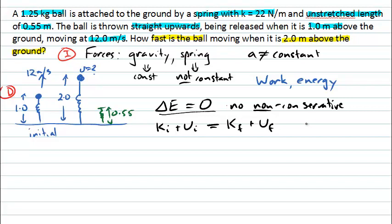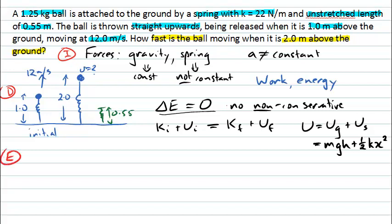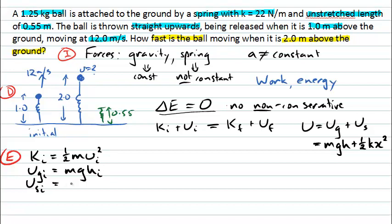That means initial kinetic plus initial potential energy must equal final kinetic plus final potential energy. Our potential energy will be a combination of gravitational potential energy and elastic potential energy from the spring. We write these as mgh for gravitational potential energy and ½kx² for elastic potential energy. We can now write down the initial conditions: initial kinetic energy is ½mv_i², initial gravitational potential energy is mg times initial height, and initial elastic potential energy is ½k times the square of the initial spring extension.